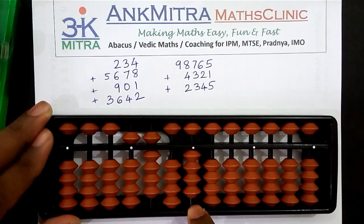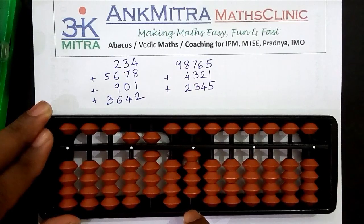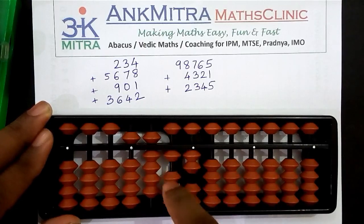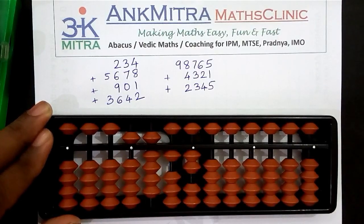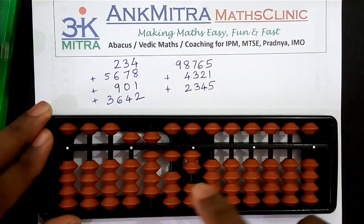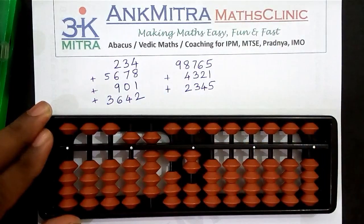Finally, coming to the addition of eight on the units place. Again I don't have eight available, so I'll use the big friend of eight. The big friend of eight is two, so I'll subtract two and add ten on the next left rod. This finishes the addition of five thousand six hundred and seventy-eight. Currently we have the answer as five thousand nine hundred and twelve.